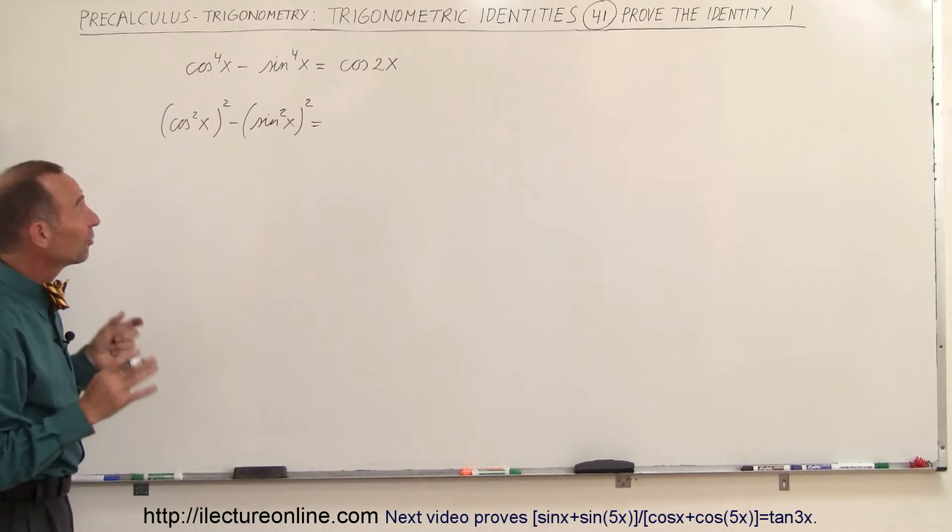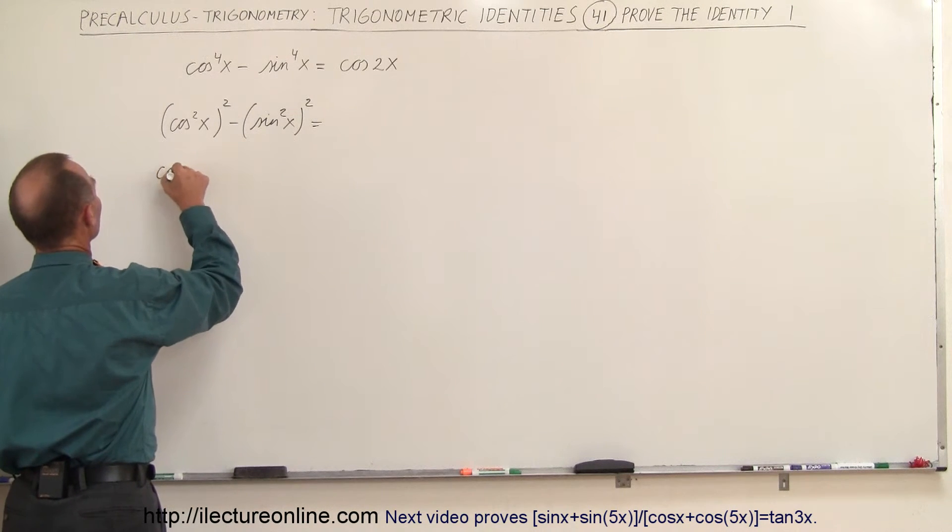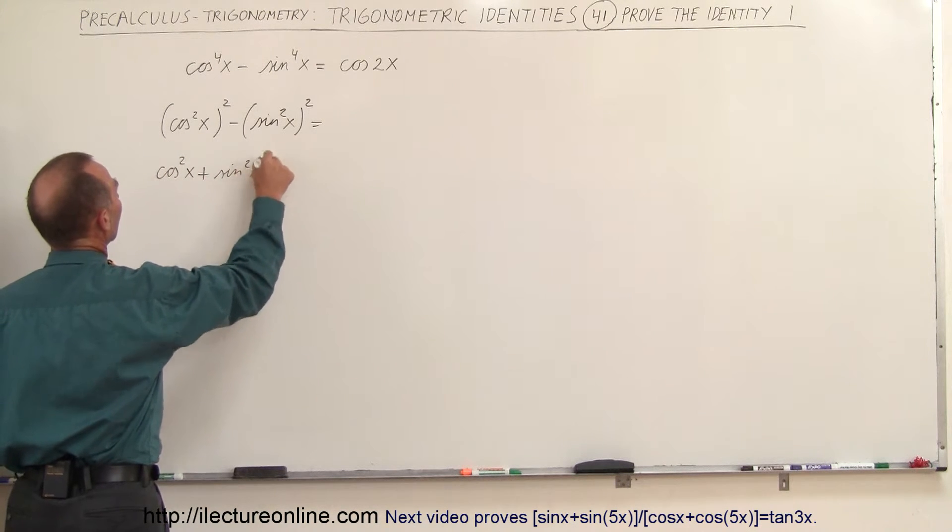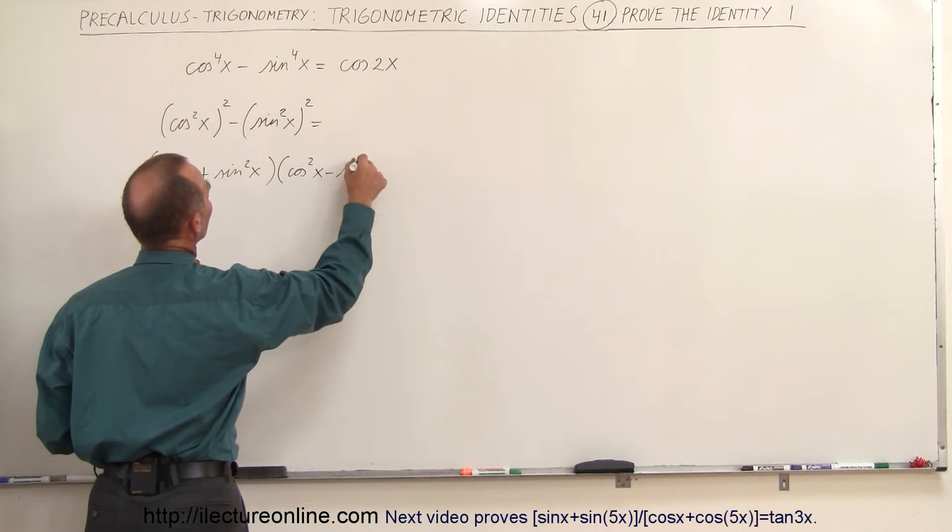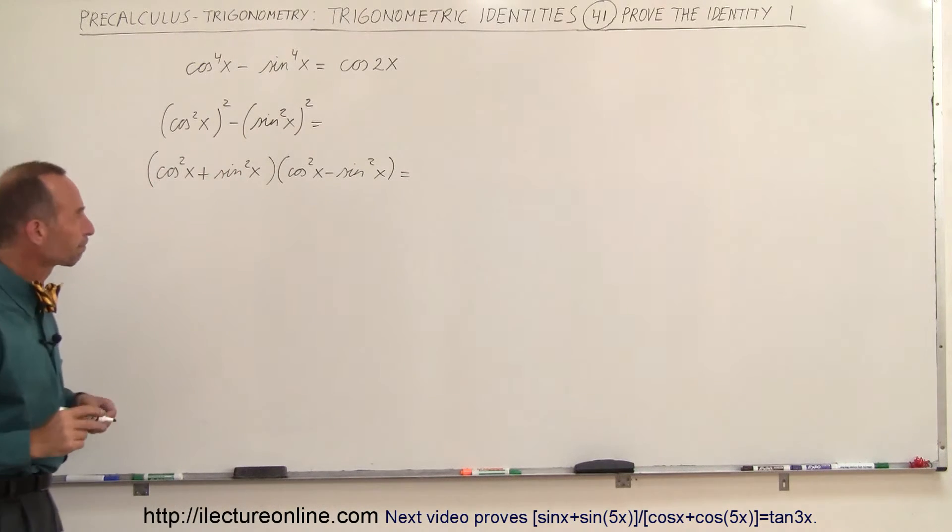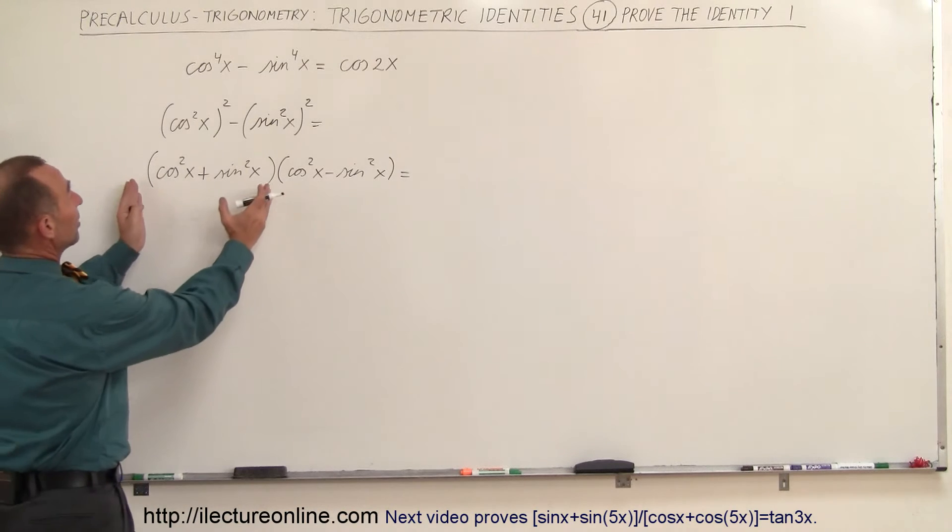So now you can see it's the difference of squares which can be factored and it'll look like this: cosine squared of x plus the sine squared of x multiplied times the cosine squared of x minus the sine squared of x. And now you can see that this is equal to 1.